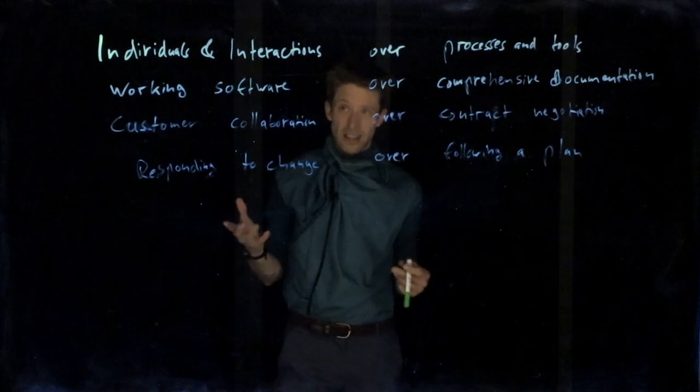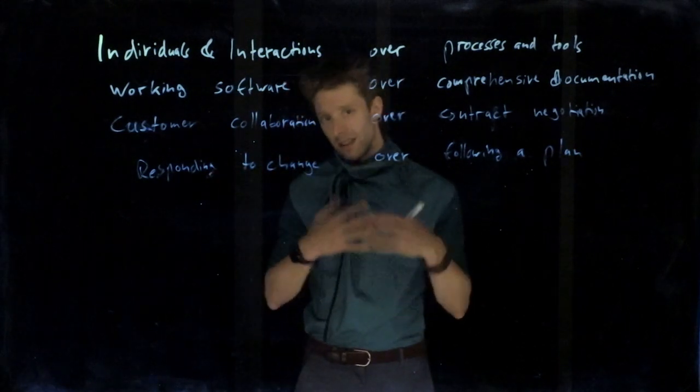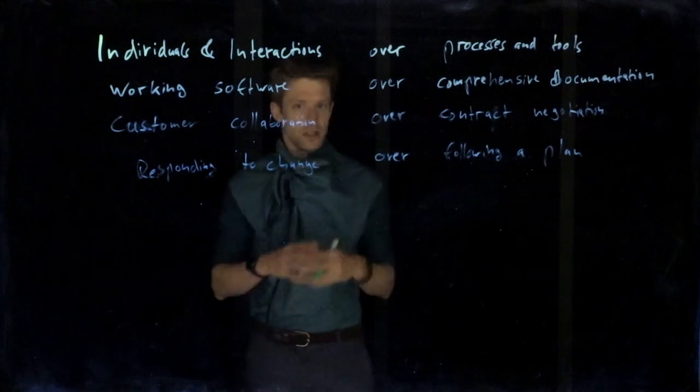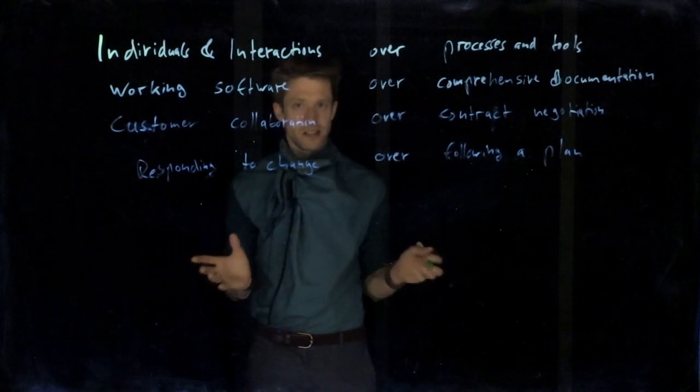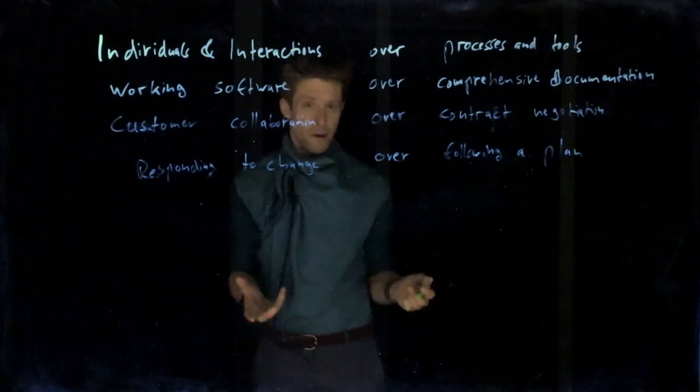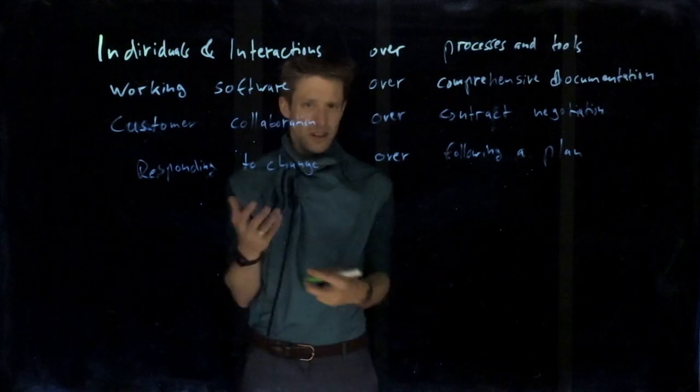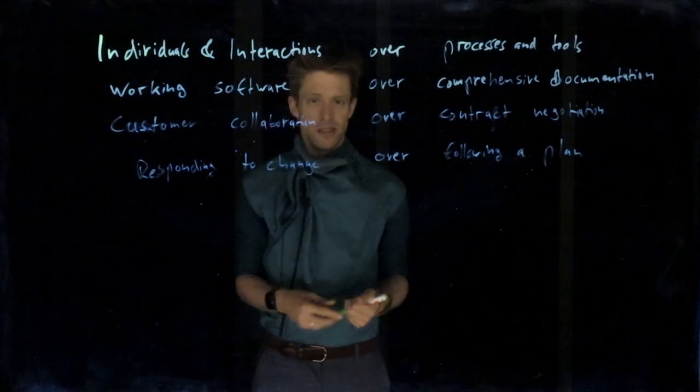But the situation around the end of the 90s was actually quite similar. We still had lots of budget overruns. For example, the chaos report I've been mentioning came out during that time. There was the dot-com bubble, so lots of things went wrong. And generally, we were not that satisfied with the way we were building software.